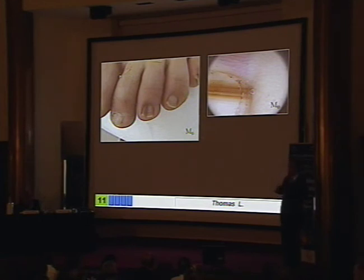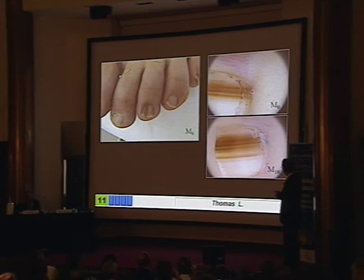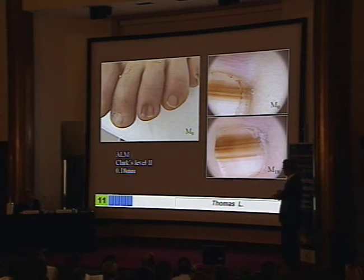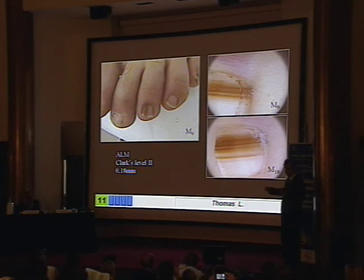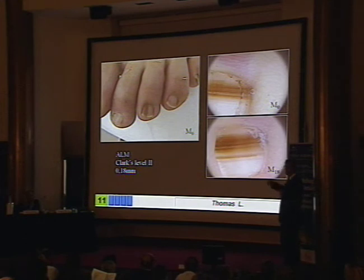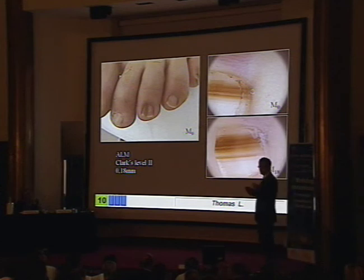In one case, the lesion was not clearly in favor of melanoma, even though the line pattern was not very regular. It took one and a half years to observe a change, and we obtained just a 0.18 mm melanoma — so there is plenty of time to make the diagnosis. In my view, it's interesting in doubtful cases to wait a little to be sure we are performing biopsies in the right cases.